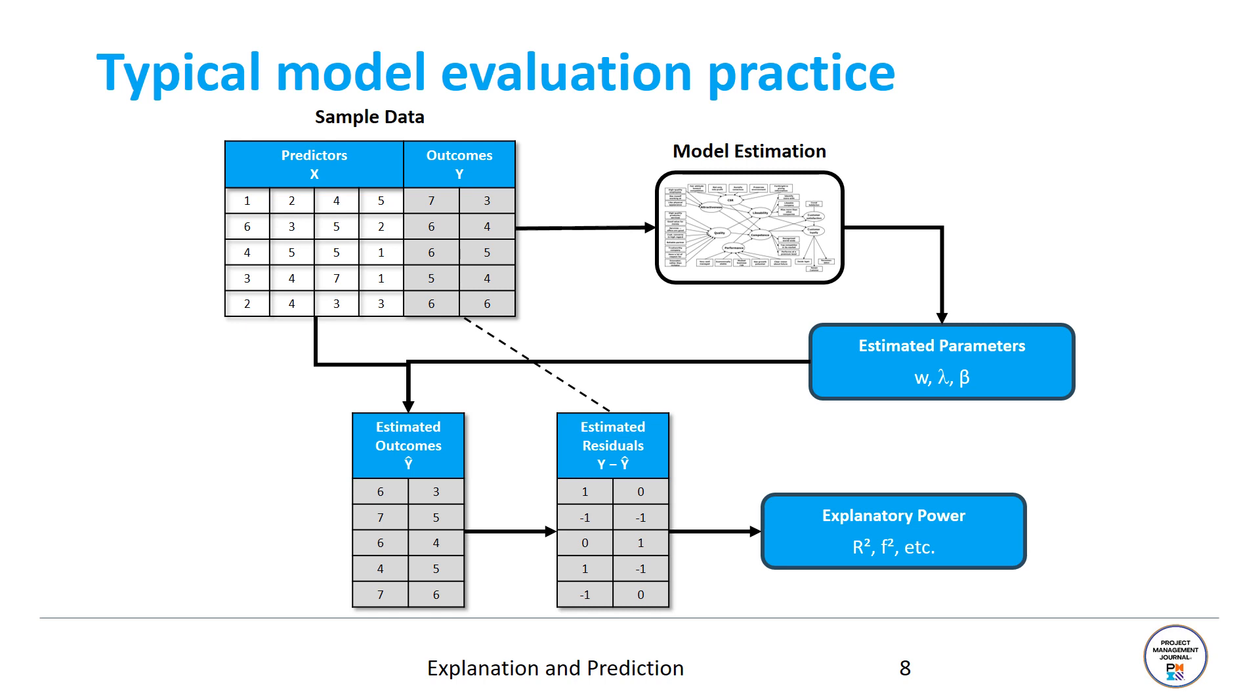Even moving beyond regression, this is common practice. In covariance-based structural equation modeling, researchers typically rely on chi-square-based statistics to assess the overall model fit and they are also being computed based on the entire dataset, in our case, for example, our five observations.